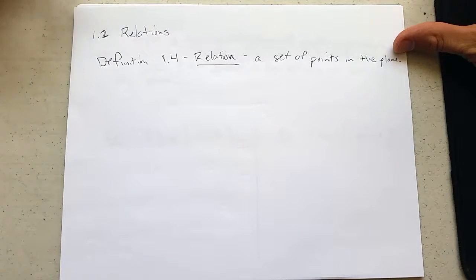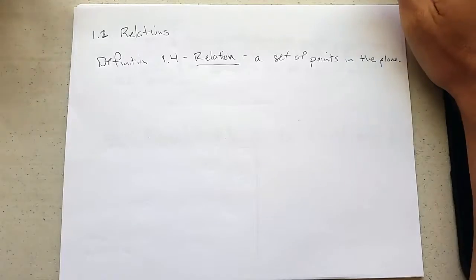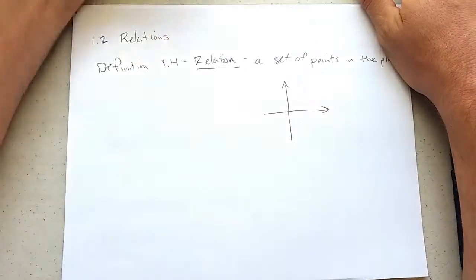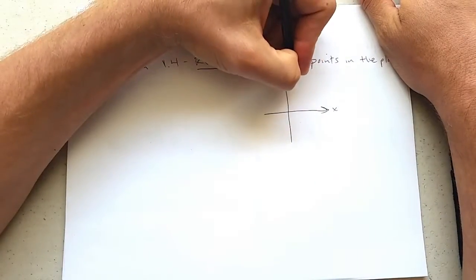Now what plane are we talking about? This is a Cartesian plane, and of course we sketch out the axis like this, x, y.